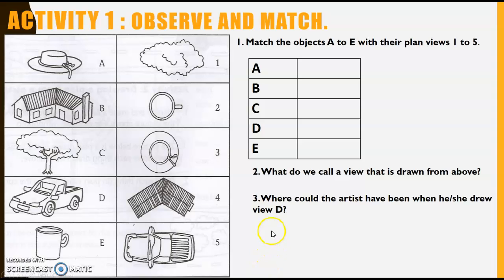The last question for our first activity says, where could the artist have been when he or she drew view D? If you look carefully, our letters are on this side. Find view D, look at it carefully, and answer number three for me. Please remember to answer in full sentences, great force.